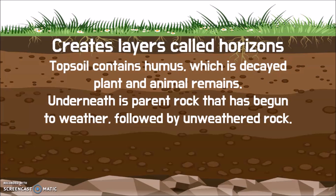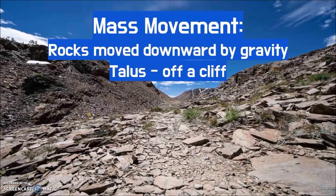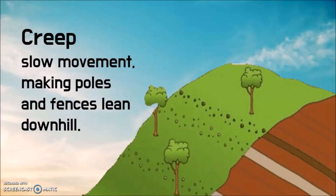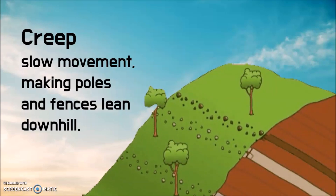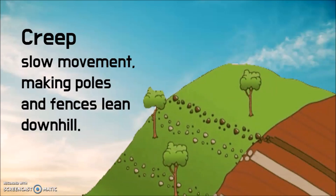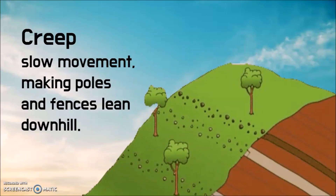Weathered rock is not going to stay in one place — it's going to move. The simplest process is called mass movement, where rocks are moved because of gravity. For example, this image is of a talus, which is where rocks fall off the edge of a cliff. Another example of mass movement because of gravity is creep, which is the slow movement of dirt down a hill, making poles and fences lean downhill.